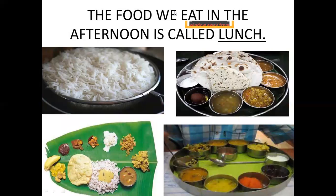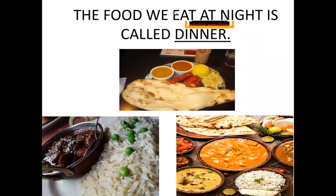The food which we eat in the afternoon is called lunch. During lunch, what are the foods we can eat, children? Rice, sambar, eggs, etc. Then, the food which we eat at night is called dinner. During dinner, we can eat chapatis, etc. So, these are the three meals we eat in a day — breakfast, lunch, and dinner. In between, we are eating food — that is called snacks.